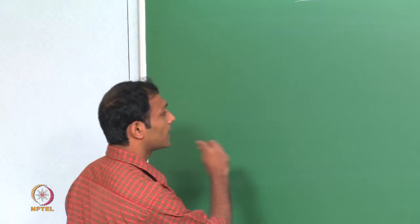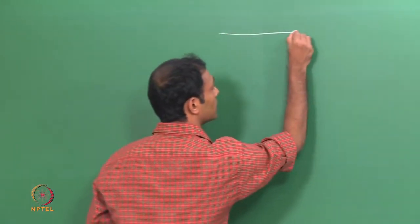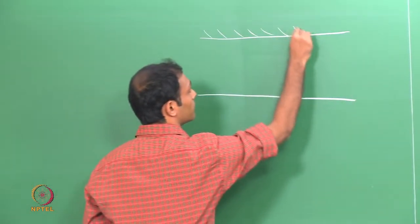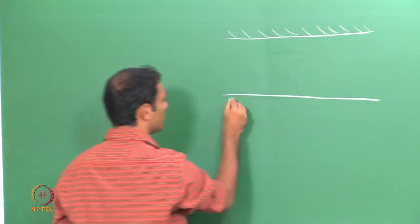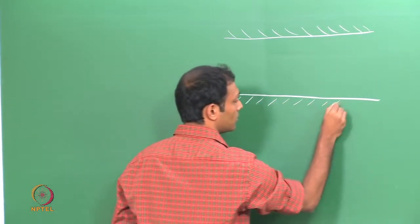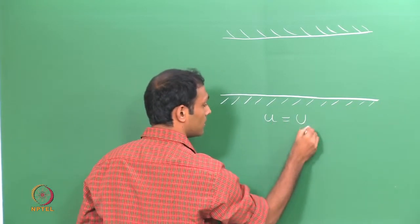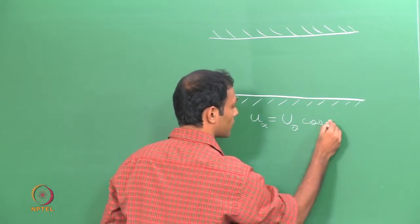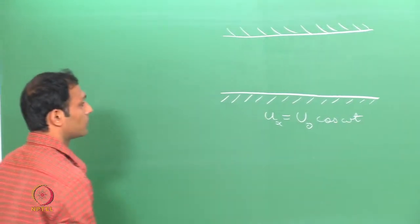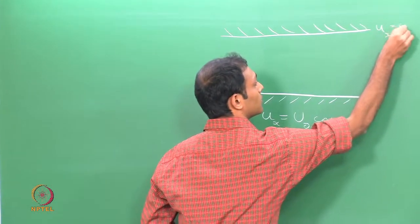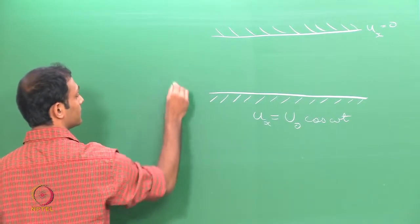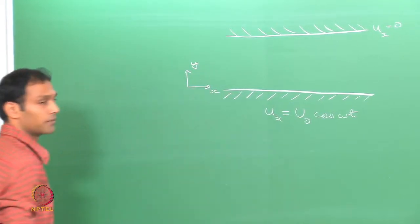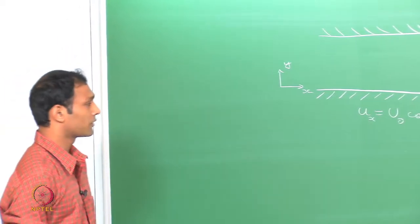The problem that we are going to look at today is a fluid which is confined between two walls. The top wall is stationary and the bottom wall is going to be moving periodically given by ux in the x direction as u0 times cos(ωt), and the top wall is stationary. My coordinate system is x in this direction and y in the perpendicular direction.